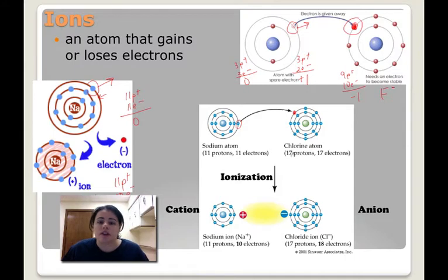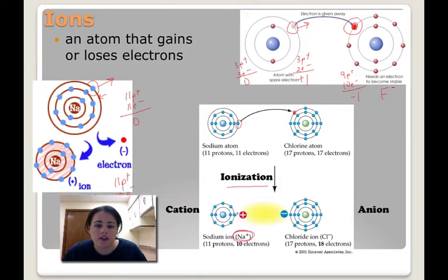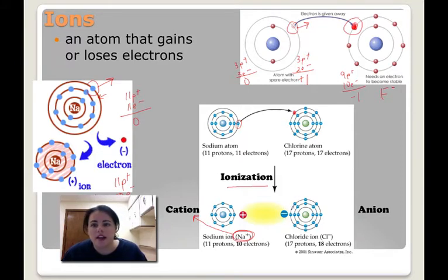The process of gaining or losing electrons is called ionization. In the next screencast we're going to talk about ionic bonds, and this is going to be a big deal because that's how they form. When it's positive — sodium lost its electron, which made it have more protons — it's called a cation, a positively charged ion. When it gains those negative electrons and becomes more negative, we call those anions.